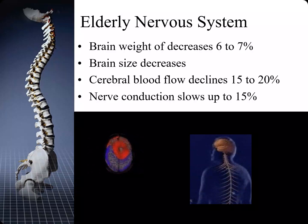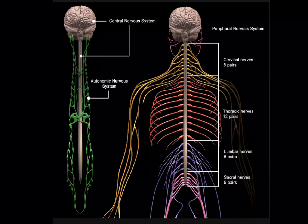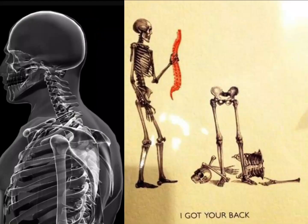The brain weight decreases six to seven percent and its size also decreases. The blood flow to the brain declines by 15 to 20 percent and nerve conduction slows up to 15 percent. The central nervous system is also protected by the spine, and as we grow older there are definite changes in the spine that impact the central nervous system as well.